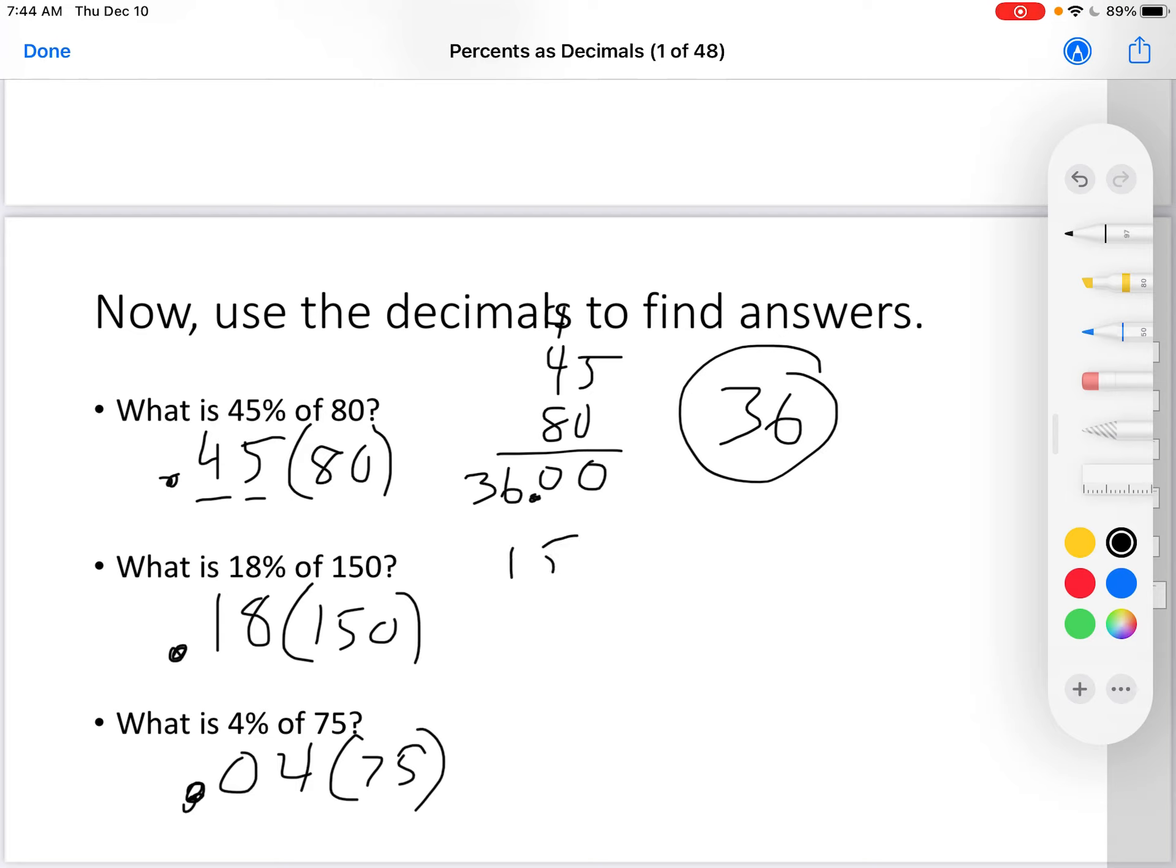Now I'll do 150 times 18. 8 times 0 is 0. 8 times 5 is 40. I'll put the 0 and carry the 4. 8 times 1 is 8, plus 4 makes 12. Now I have to multiply by the 1, so I put the placeholder 0 because it's in the tens place. 1 times 0 is 0, 1 times 5 is 5, 1 times 1 is 1, and let's add those up: 0, 0, 7, 2. But remember, there's two decimal places, so I'll put two decimal places in the answer, and the answer is 27.